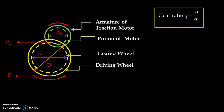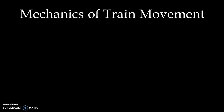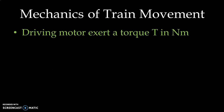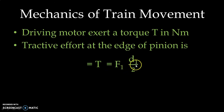Now let us derive an expression for tractive effort. The tractive effort at the edge of the pinion is transferred to the driving wheel by means of the gear wheel. As per the laws of dynamics, to generate acceleration in any mass we require force. So the driving motor exerts a torque T in Newton-meters. The tractive effort at the edge of the pinion is T = F1 × (d1/2), and in terms of force, F1 = 2T / d1.